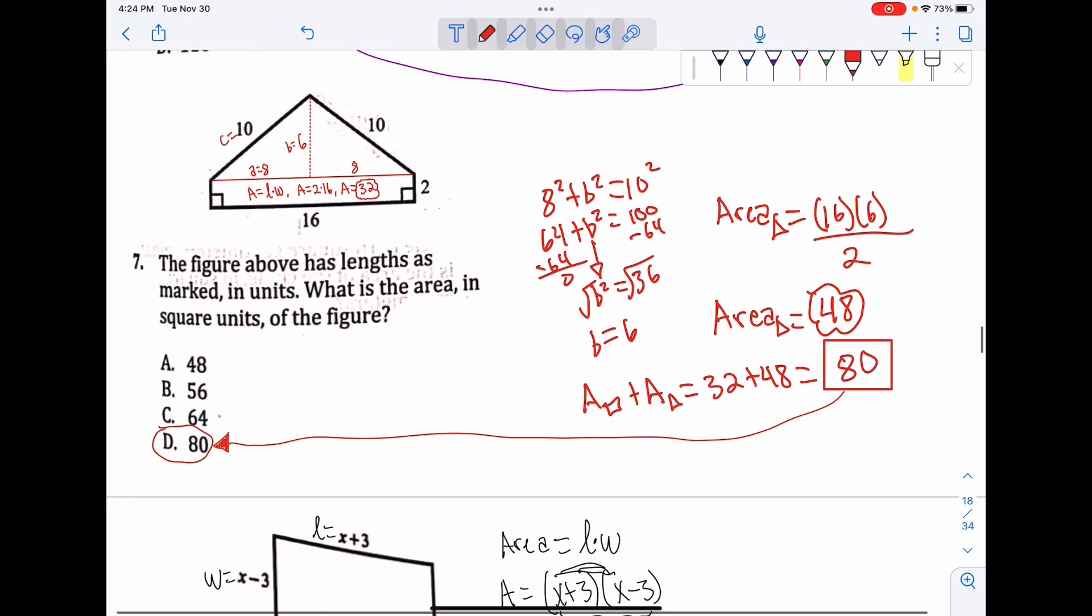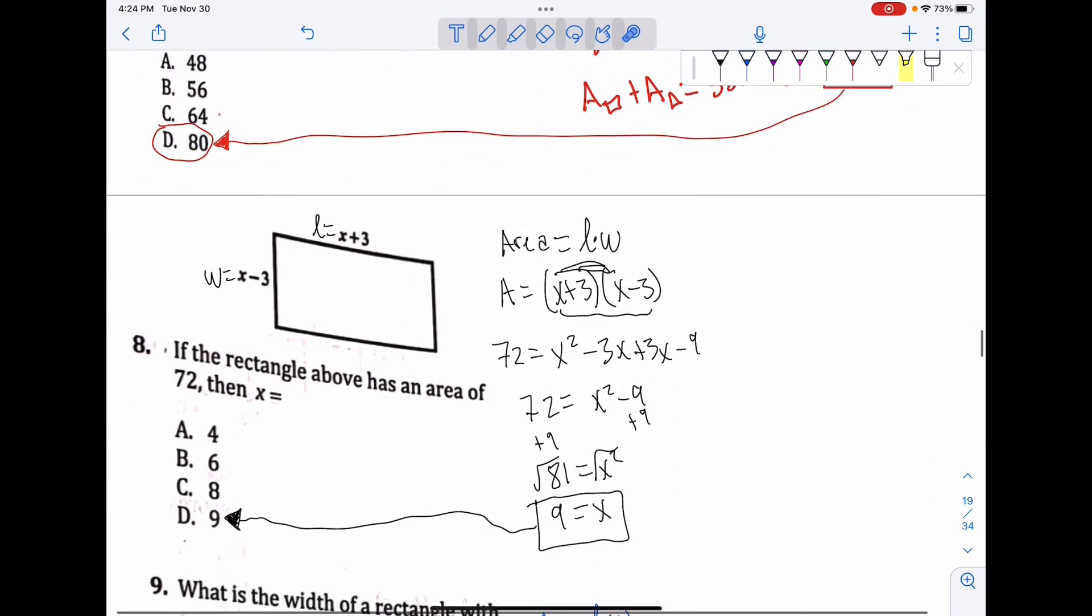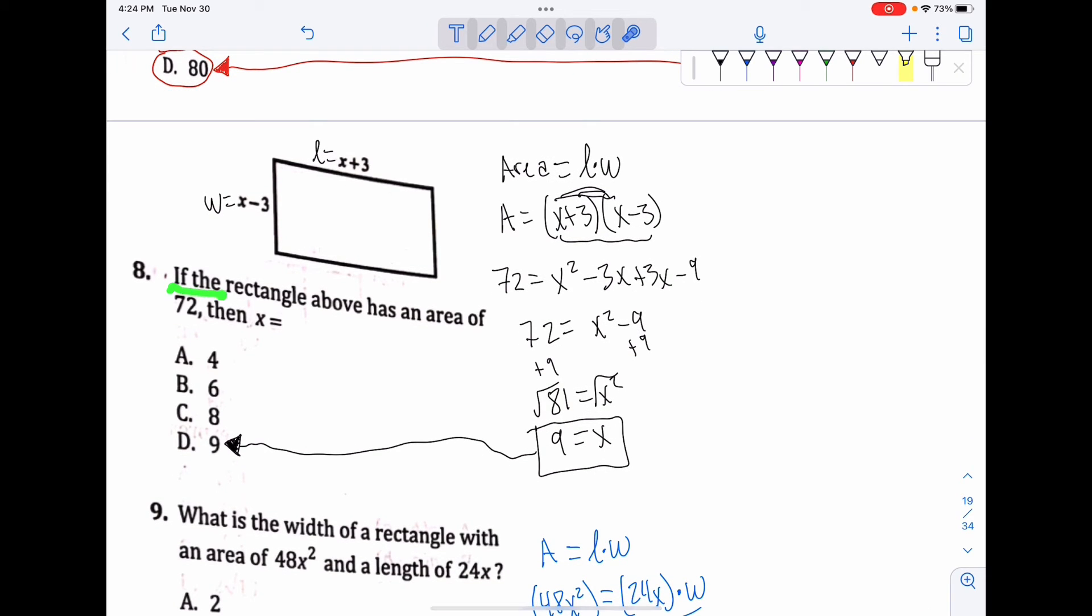All right, moving on. Here we have a rectangle has an area of 72. We're trying to find x. Area is length times width. My length is this, my width is this, so I just plug it in: (x + 3)(x - 3). We FOIL it out: x², -3x, +3x, -9. These two cancel out, x² - 9. Add 9 to both sides: 81. x² equals 81, square root both sides, x equals 9. Final answer is D, 9.